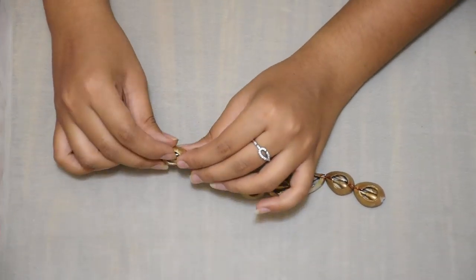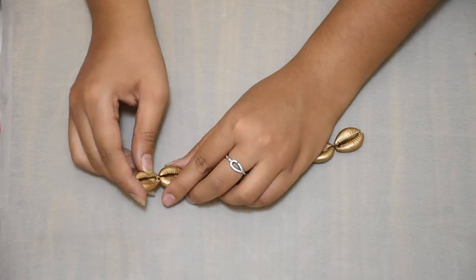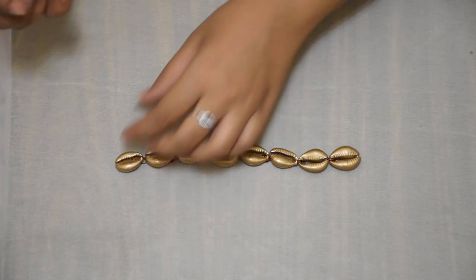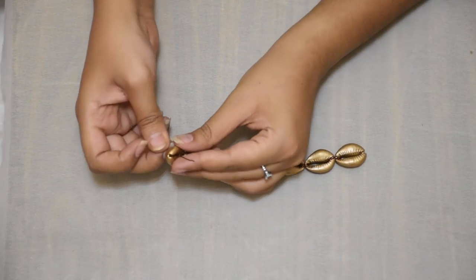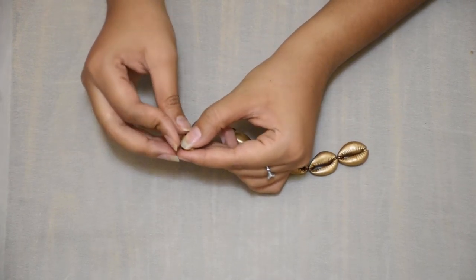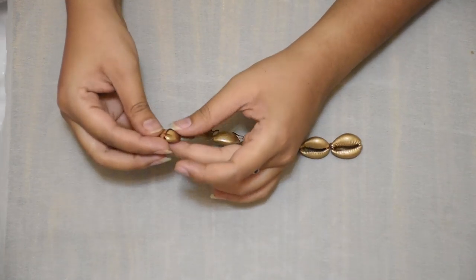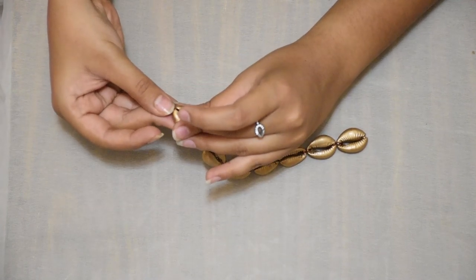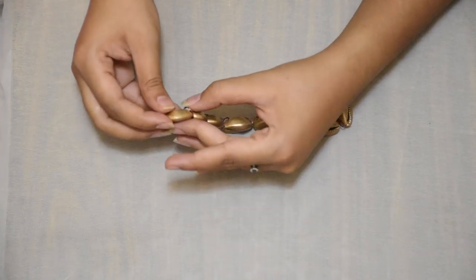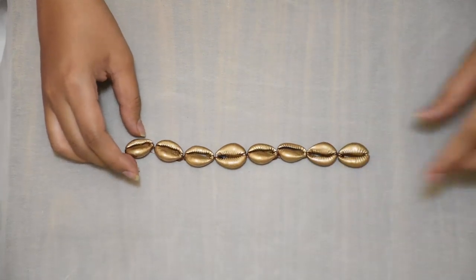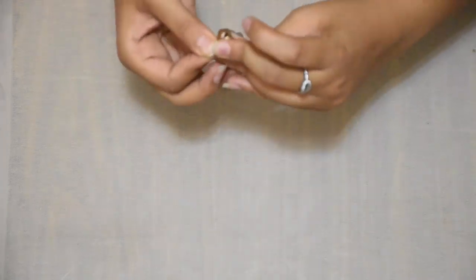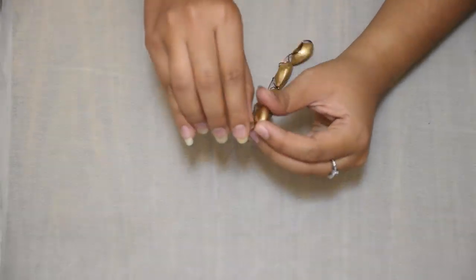So we are almost done with the choker. This is how it should look like. Next up we will be covering the last ends of the shells with the wire. Again, make sure you put the edges of the wire inside the shell very precisely so that it doesn't hurt you on the skin. You can even use a nose ring plier to put the wires inside it. That might be more convenient for you. So this is for the first part of our video. Our choker is complete.